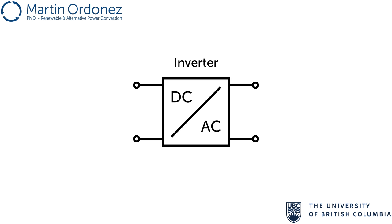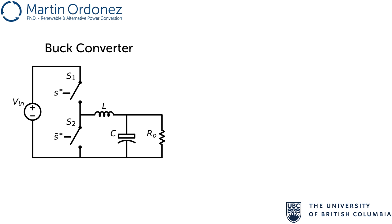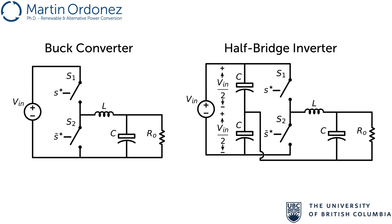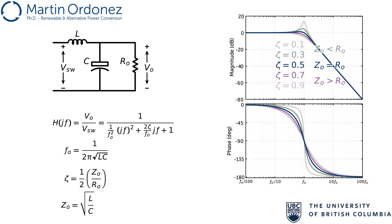In this video, we explain the need to have converters that can turn DC sources, such as PV panels, into AC voltage to interface the grid, for example. From the buck converter, we derive the half-bridge inverter and develop a modulation circuit to create the desired AC voltage waveforms. We then explore the need for the output filter and its design criteria.